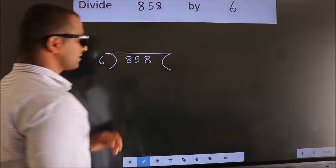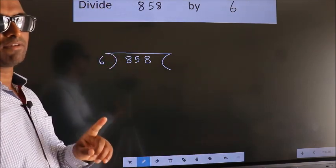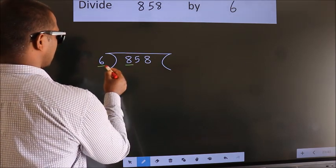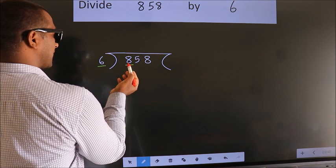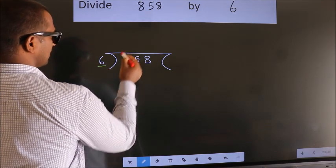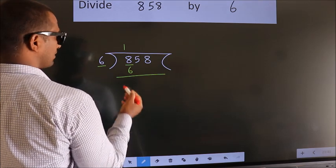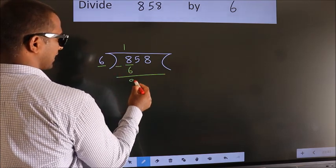This is your step 1. Next, here we have 8, here 6. A number close to 8 in 6 table is 6 once 6. Now we should subtract. We get 2.